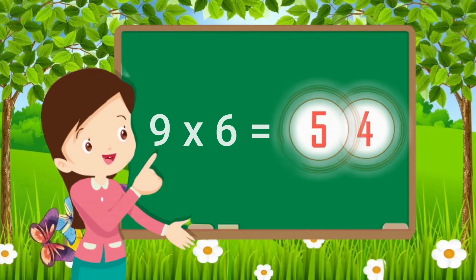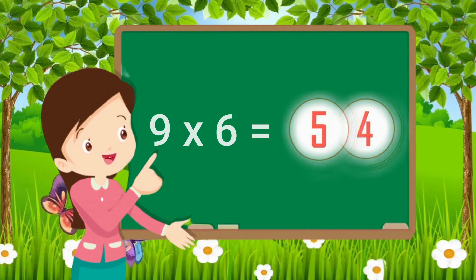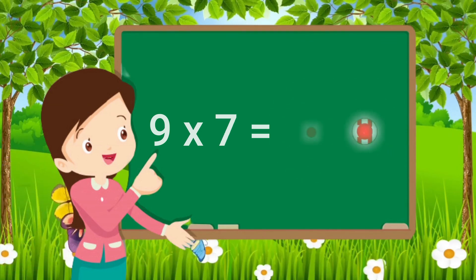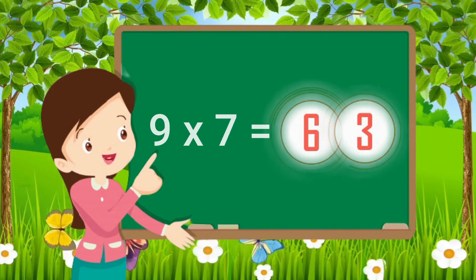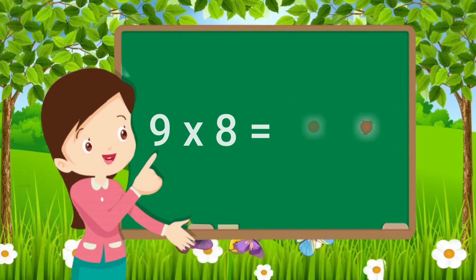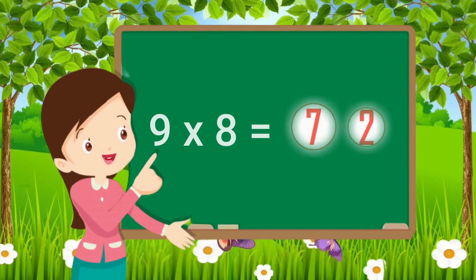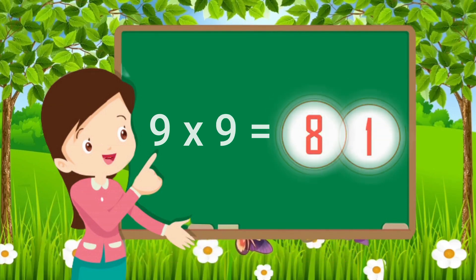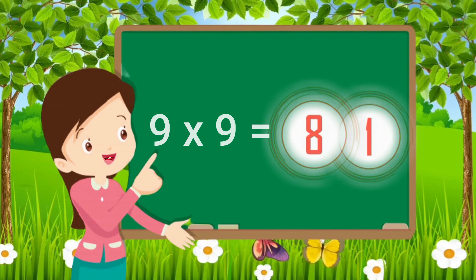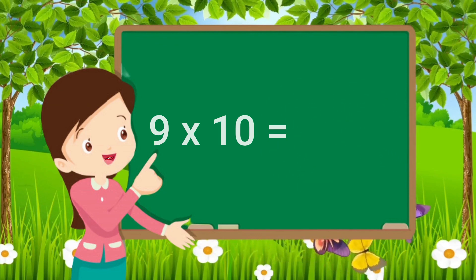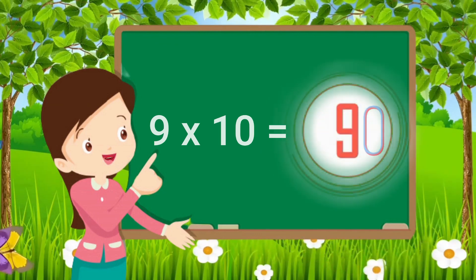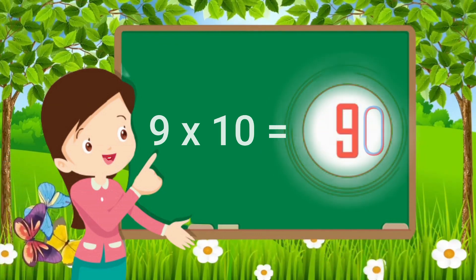Nine sixes are fifty-four. Nine sevens are sixty-three. Nine eights are seventy-two. Nine nines are eighty-one. Nine tens are ninety.